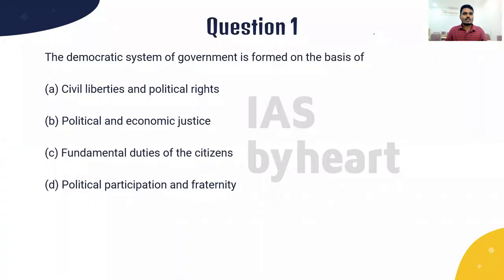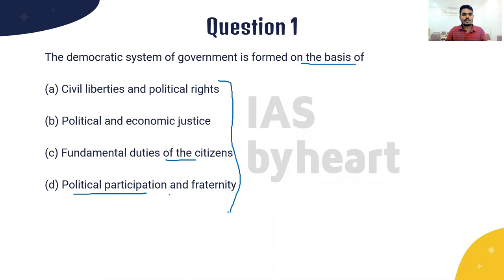The first question: the democratic system of government is formed on the basis of. This question is from polity. There are four options given. Option A: civil liberties and political rights. Option B: political and economic justice. Option C: fundamental duties of the citizens. Option D: political participation and fraternity. Based on which of these the democratic system of government is formed — that is the question.